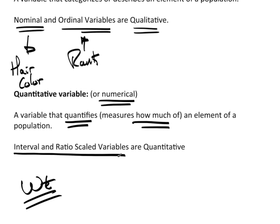So interval and ratio scale variables, both interval and ratio scale variables, are quantitative. They quantify something. They tell us how much of something is there.